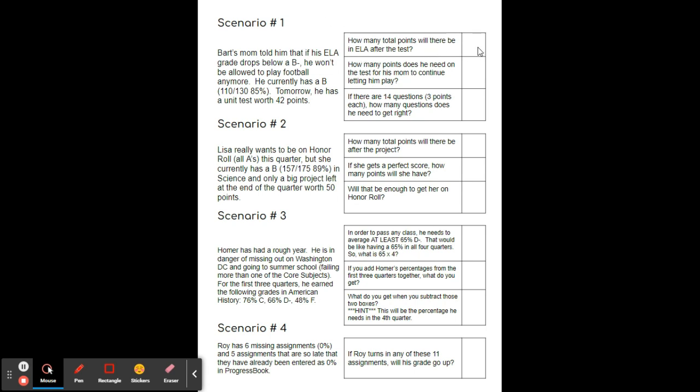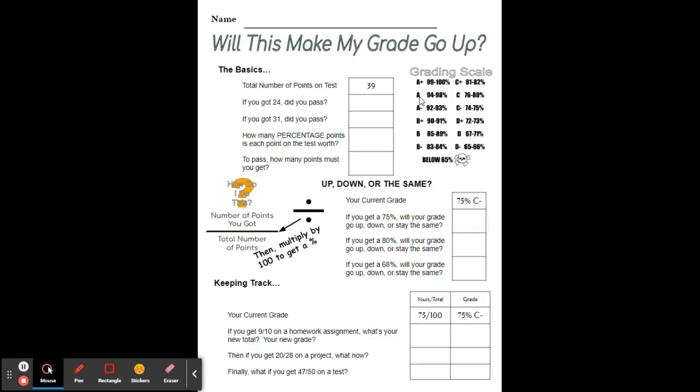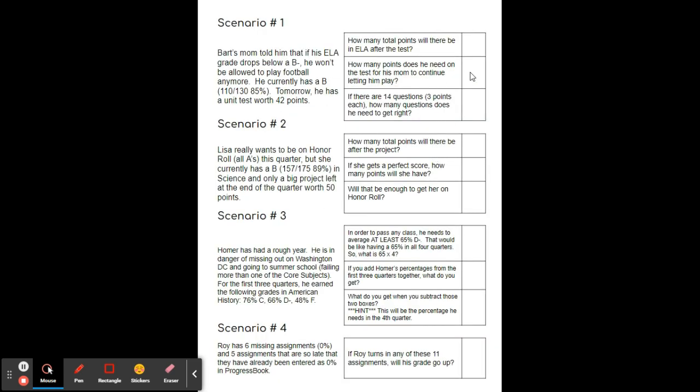Anyway, so this is 130 plus 42. Right here you need 85, I'm sorry, 83% because 83% is still a B minus, 83% of this box right here. So if you take 0.83 times this right here, that will tell you the total number of points that he needs after the test.